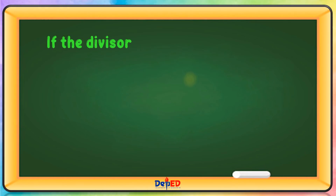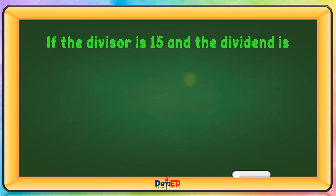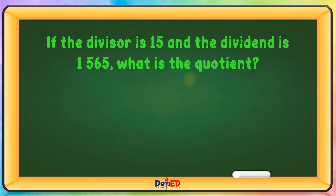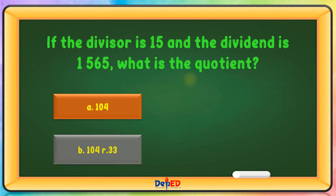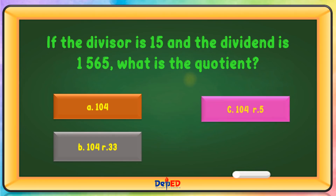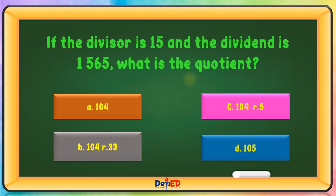If the divisor is 15 and the dividend is 1,560, what is the quotient? A. 104, B. 104 remainder 33, C. 104 remainder 5, or D. 105. The correct answer is C.